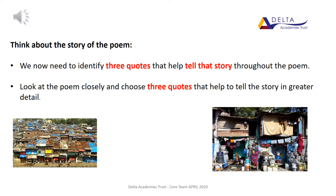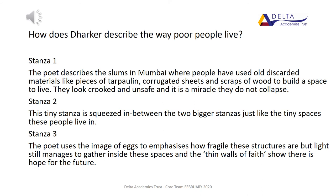We'll need three quotes to support what we're saying and to help retell that story in greater detail. We're going to think about how Dhaka describes the way poor people live in India. In stanza one, she begins by describing the slums in Mumbai and how people use old discarded materials to create a space to live. She explains that they look crooked and unsafe, and believes it's a miracle that they don't collapse. Stanza two is squashed in between two larger stanzas. This tiny stanza shows just what it's like to be squashed in a tiny living space in between lots of other people.